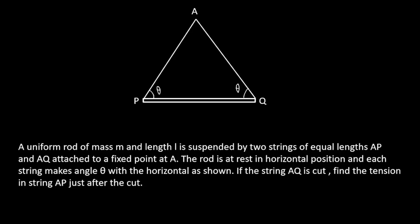Welcome all. This is a very good problem in rotational mechanics and it is also complex, but I will try to show you how by choosing a non-inertial frame you can simplify this problem to a great extent. The question says that there is a uniform rod of mass m and length l, suspended by two equal strings AP and AQ which are fixed at point A in the ceiling. The rod is at rest in the horizontal position and each string makes angle theta with the horizontal. If the string AQ is cut suddenly, you have to find the tension T developed in the other string.